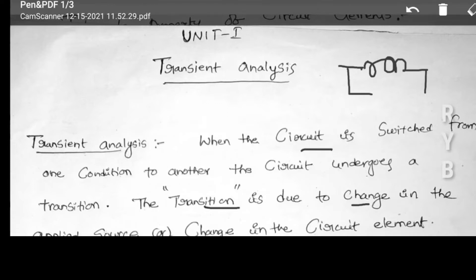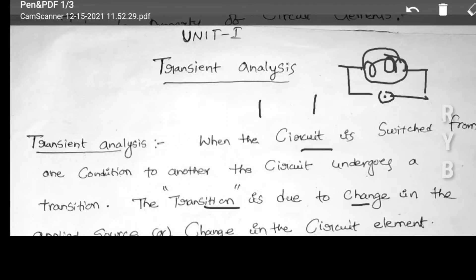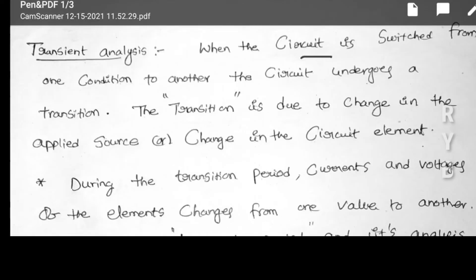Transient is the condition between one steady state and another steady state. Suppose an inductor is there — before it is connected to supply, some energy may or may not be there. Suddenly if you connect the source or supply for this inductor, it changes to another state. Finally it will come to a steady state. Between one state and another state, the inductor suffers due to transient.